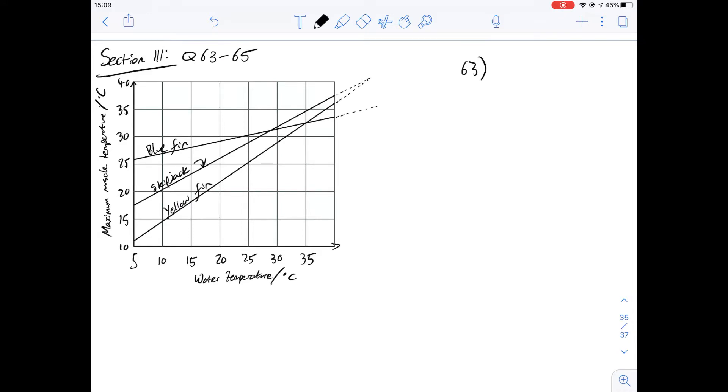Option A says yellowfin at a water temperature of zero. Well, as the water temperature would be zero around here, the line would be a lot lower than that and the maximum muscle temperature would be probably around five with the scale used here. For B, it says yellowfin at the water temperature of five degrees C. It's got a higher maximum muscle temperature than at that point, greater than 10. We can see it on the bottom line there.